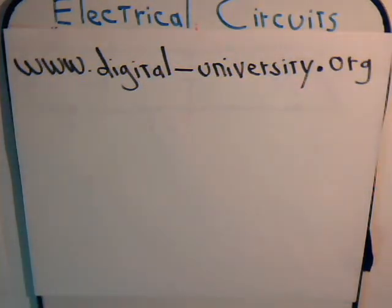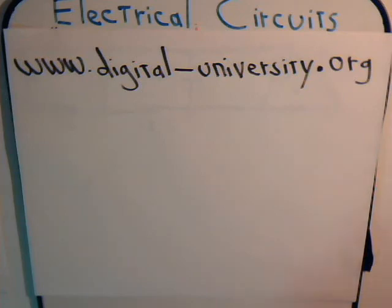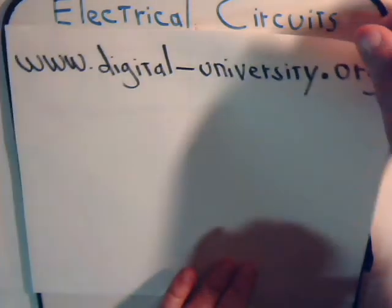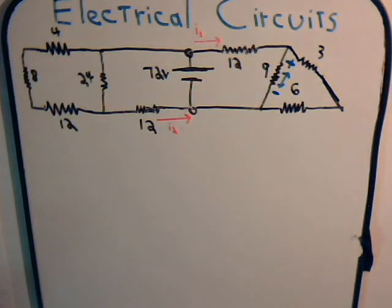This is video number nine from Digital Gash University, where we're considering different types of techniques for analyzing electrical circuits. This is our second example of a relatively simple direct current circuit that we're going to examine, and we have several unknowns to determine.